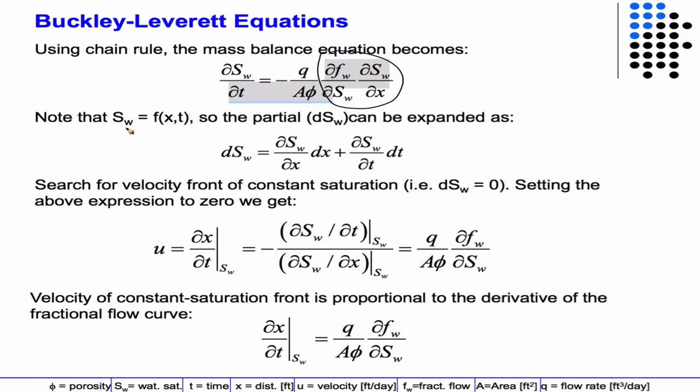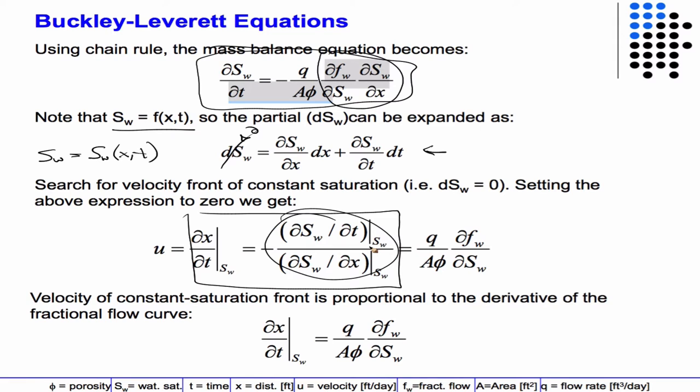Because the water saturation is a function of x and t, we look at a differential change in the water saturation and we get this equation. At the velocity front, there's a constant saturation, so this is zero, and we can solve this equation. By also solving this equation for a term that looks like this, we can see that what you get is on the other side.